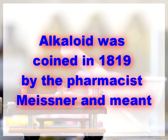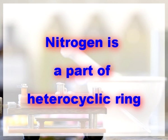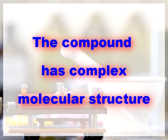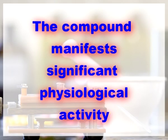The term alkaloid was coined in 1819 by a pharmacist Meissner and means simply 'alkali-like molecule.' There are two types of alkaloids. First one is true alkaloids, defined as compounds meeting four qualifications: nitrogen is part of a heterocyclic ring, occurrence is restricted to the plant kingdom, the compound has a complex molecular structure, and the compound manifests significant physiological activity.